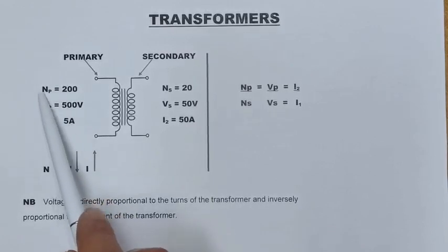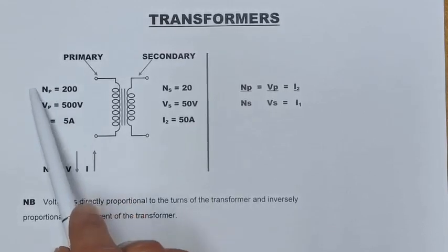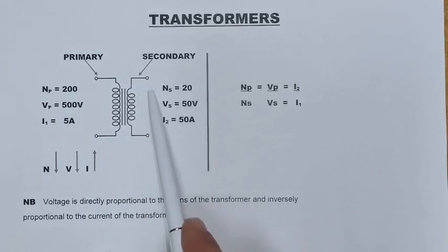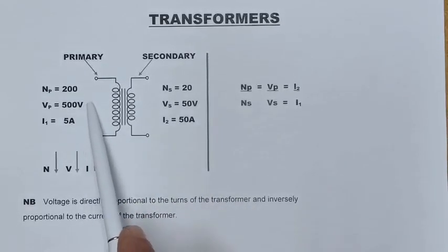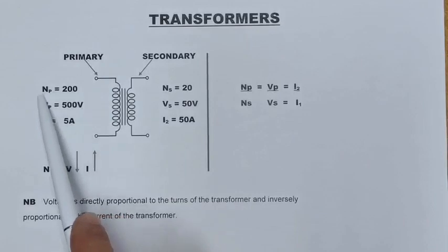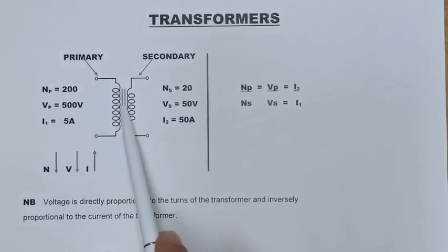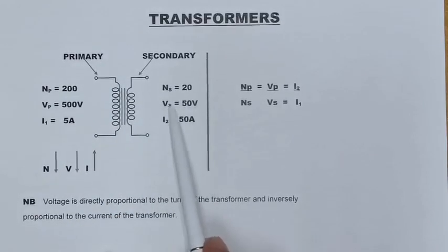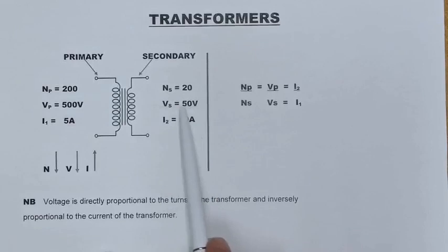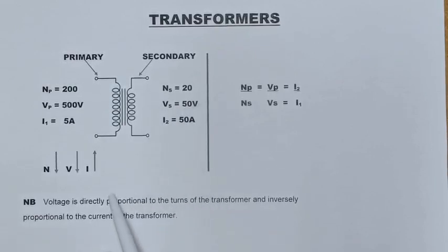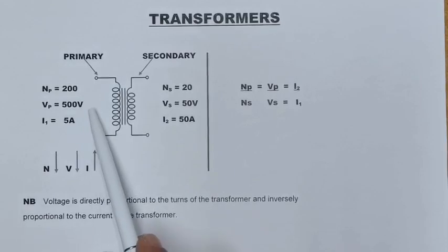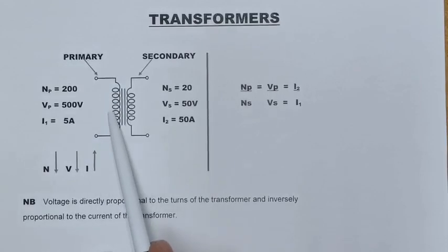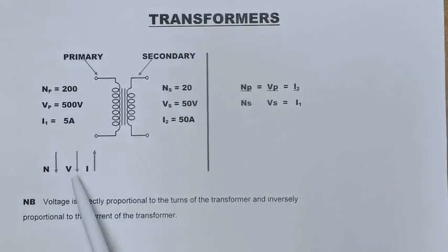Let's say we have 200 turns on the primary and 20 turns on the secondary, and let's also say that we have 500 volts on the primary — which means we're going to have 50 volts on the secondary side. The reason for that is because the voltage of a transformer is directly proportional to the turns of the transformer.